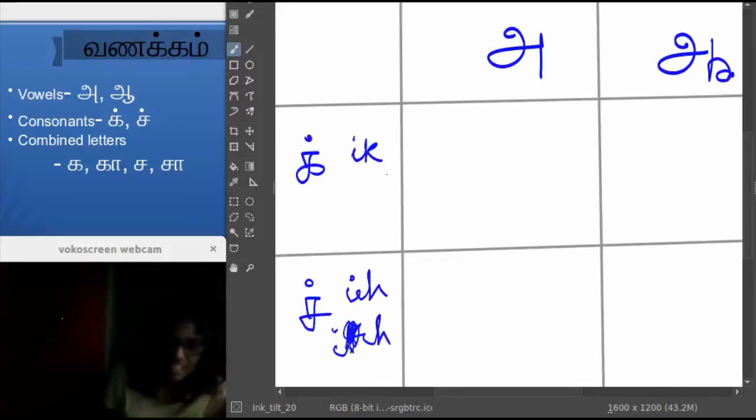So IK plus A is KA. We don't want this I sound in the combined letters. We leave off the I sound and the sound becomes KA. And for the long note, IK plus Ā is KĀ.